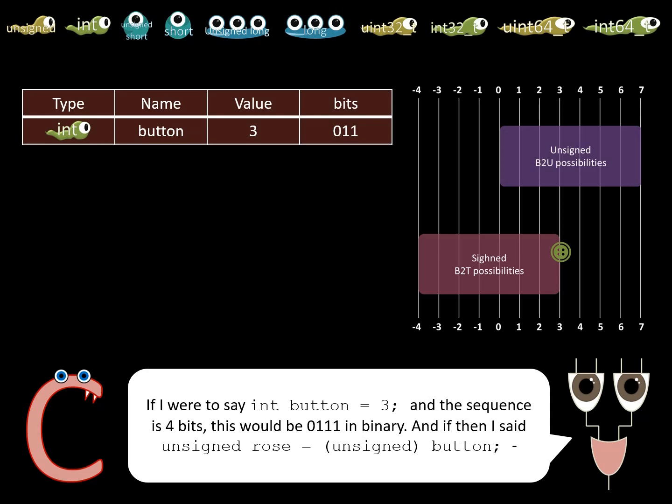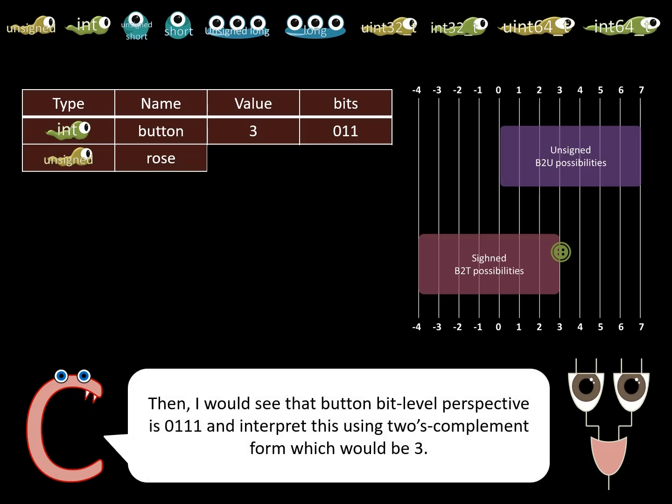And if then I said unsigned rose = (unsigned)button, then I would see that button from a bit level perspective is 0111, and interpret this using two's complement form, which would be 3.